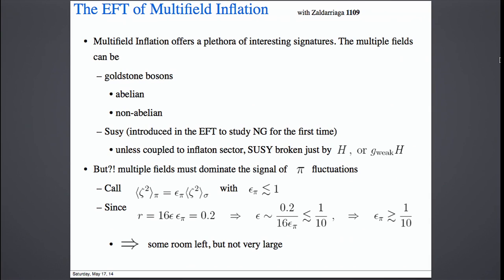If you work in multi-field inflation, it must be that what we see comes from multiple fields. It must be that the curvature induced by the pi fluctuation be smaller than the curvature induced by the additional fields sigma, by a coefficient epsilon_pi less than 1. Now, if r is 0.2, r equals epsilon times epsilon_pi. This means epsilon_pi must be bigger than roughly a tenth. So after BICEP, there is no room to make epsilon_pi arbitrarily small. Even if you have multi-field inflation, the single-field sector is quite around the corner. This is not powerful enough to completely rule out multi-field inflation, but the situation is a bit squeezed.